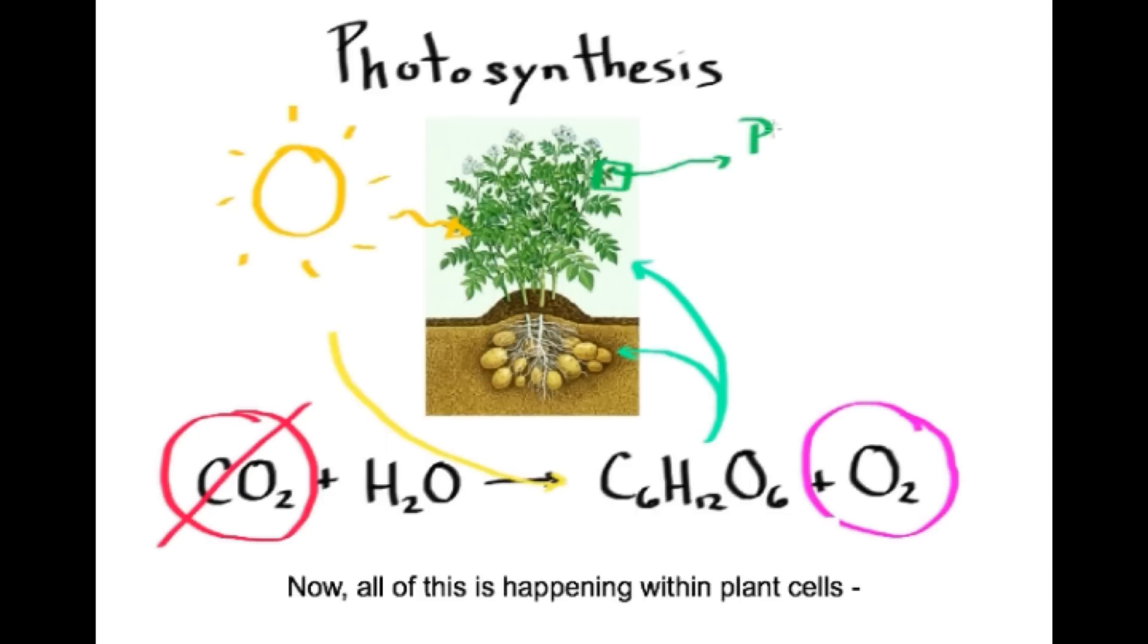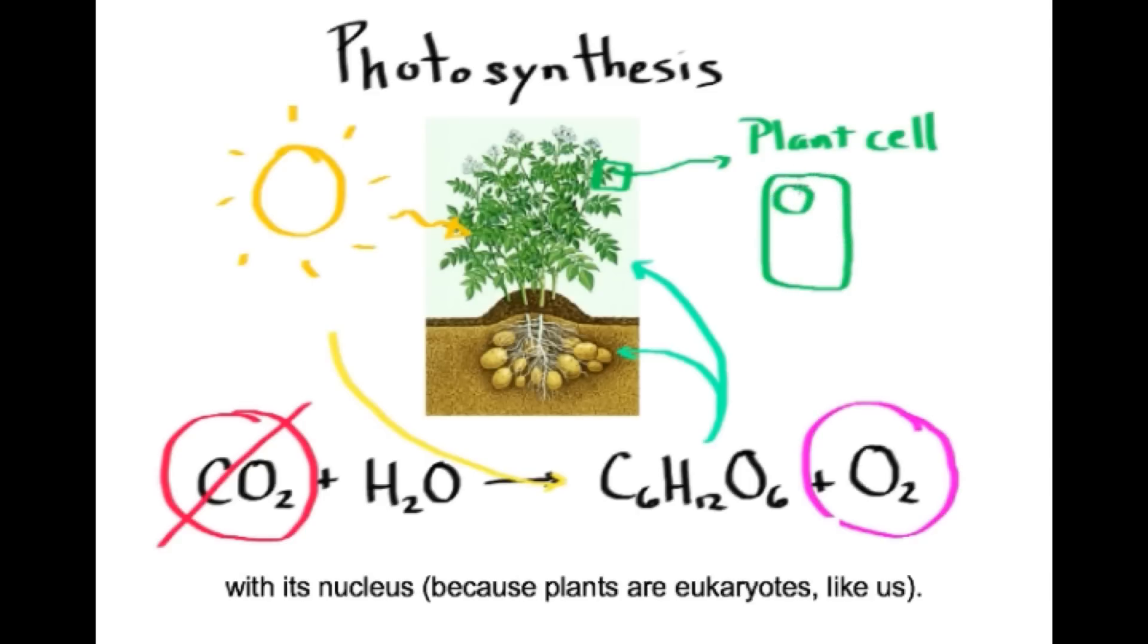Now all of this is happening within plant cells. Here I'm going to draw a magnified plant cell with its nucleus, because plants are eukaryotes, like us. And here I'm drawing these structures that contain light-absorbing pigments that give plants their green color, and allow the plant to capture energy from sunlight. These pigment-containing structures are called chloroplasts, and it's here that photosynthesis occurs.